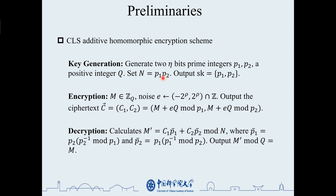The encryption phase generates random rho bit error e and outputs ciphertext c which is the value of m plus eq mod p1 and p2 respectively. The decryption phase is to calculate m prime by the Chinese remainder theorem and then mod q, which is the message value m.